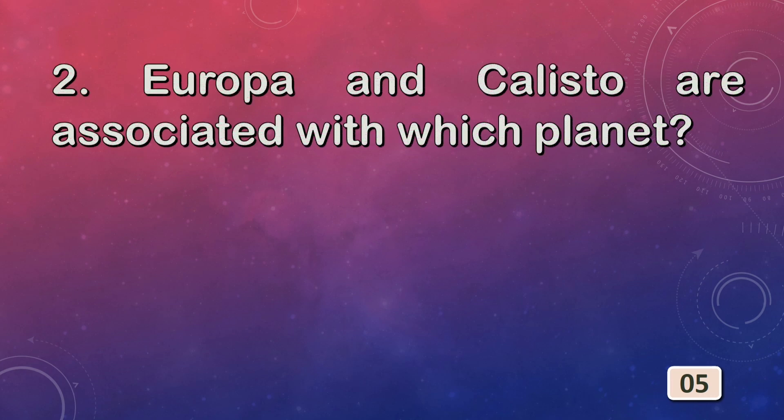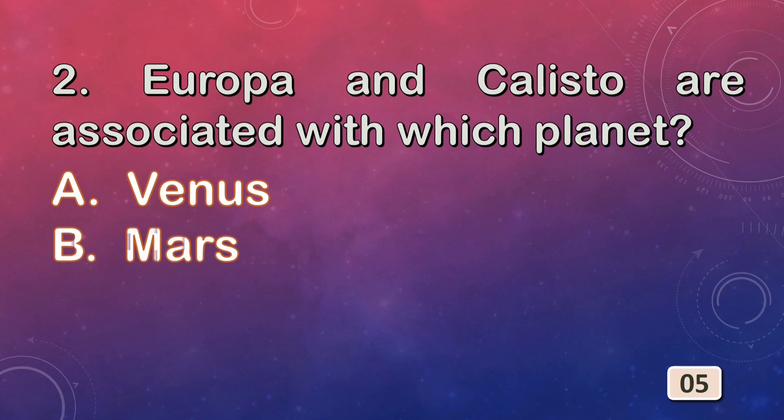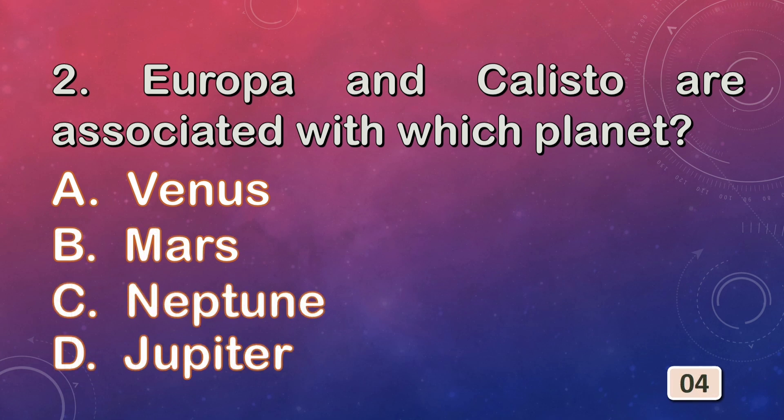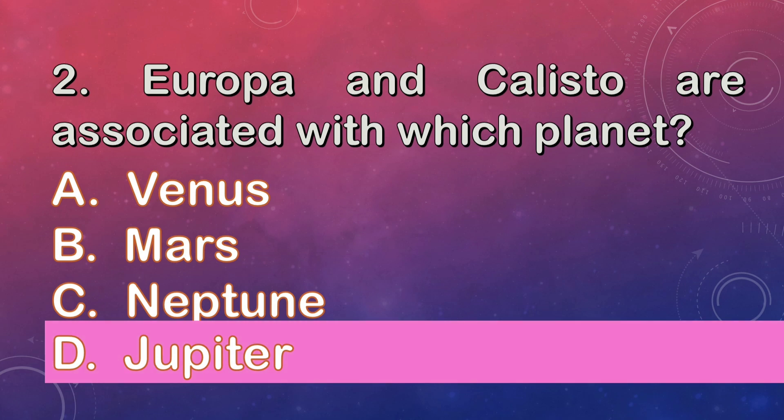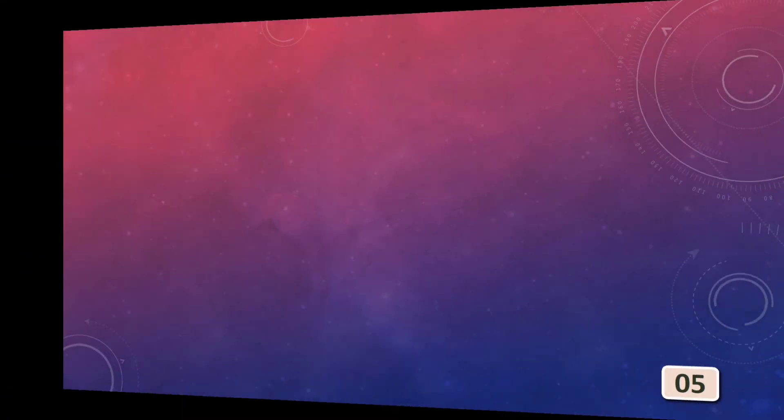Europa and Calisto are associated with which planet? Options are: A. Venus, B. Mars, C. Neptune, or D. Jupiter. Europa and Calisto are associated with planet Jupiter.